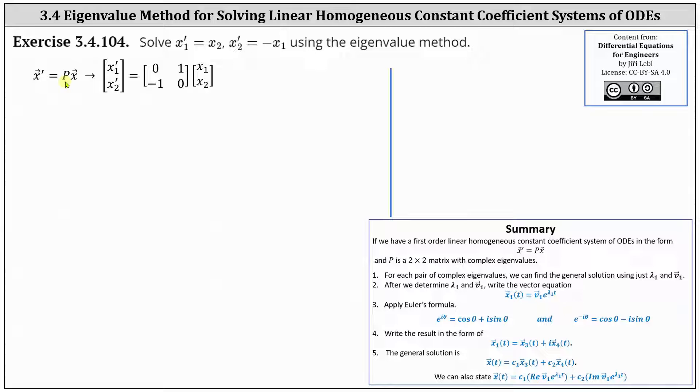Notice matrix P is the two-by-two matrix where in the first row we have entries zero and one, and in the second row we have entries negative one and zero.